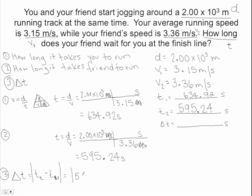Okay. So we have 595.24 seconds minus 634.92 seconds and we get 39.68 seconds. Okay. So your friend has to wait for you for like less than a minute. So they're not that much faster than you, but we are much better than them at physics. So don't feel bad.